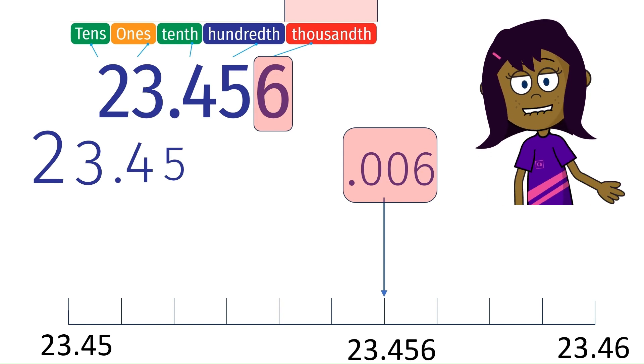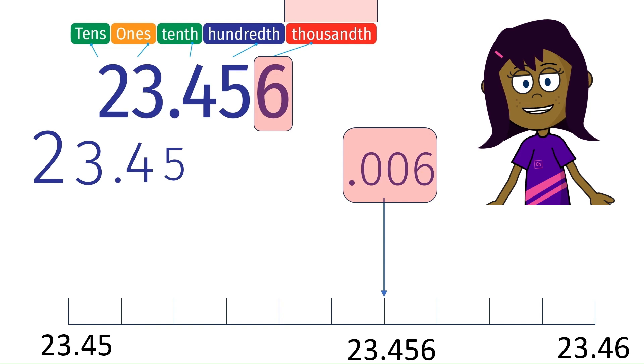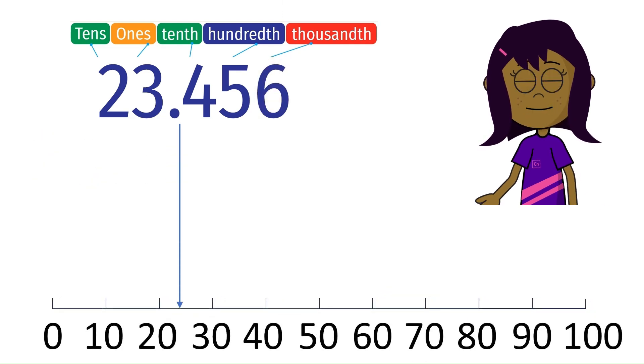So we have located the number on the number line. If you zoom out, you will see that 23.456 is located right about here.